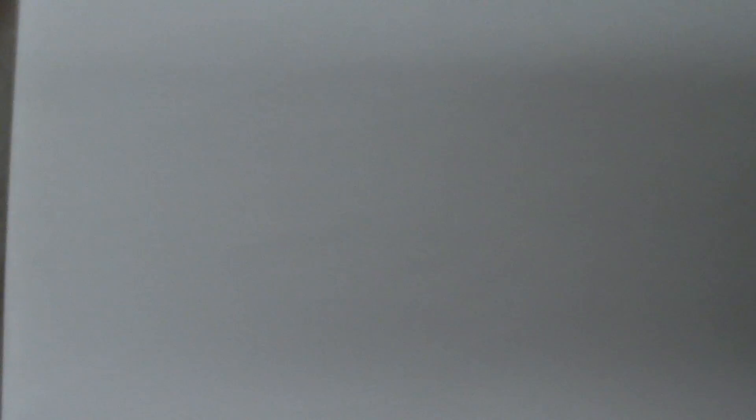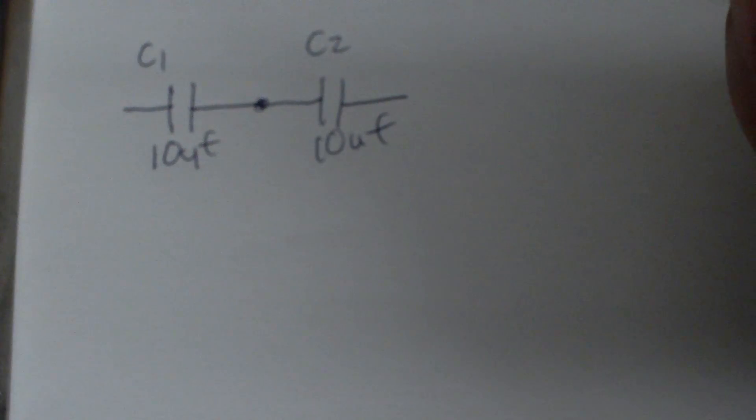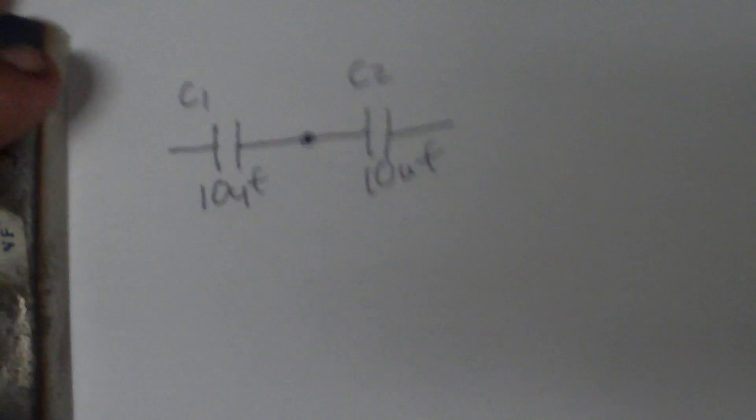Now, let's get into series capacitors. I'll start out simple here. You've got two capacitors in series, C1 and C2. Say this one's 10 microfarad and this one's 10 microfarad. Okay, if you can see that alright.